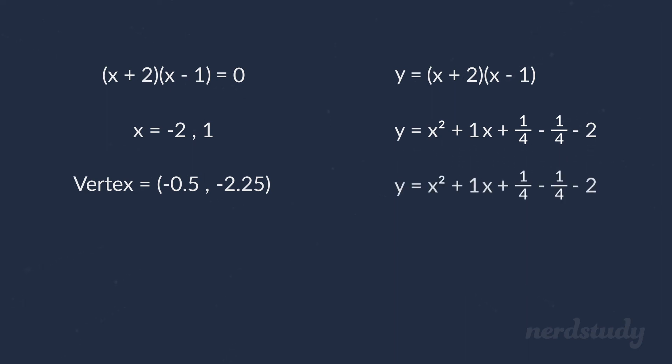If we simplify this perfect square trinomial, we get this, and simplifying the rest of it gives us this. So, this is our final vertex form that we end up with.